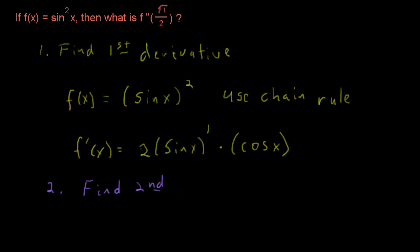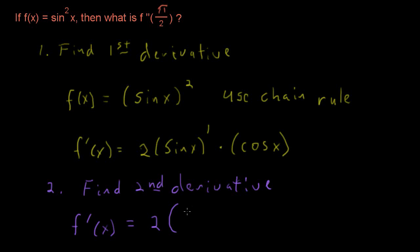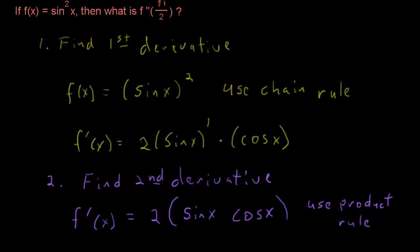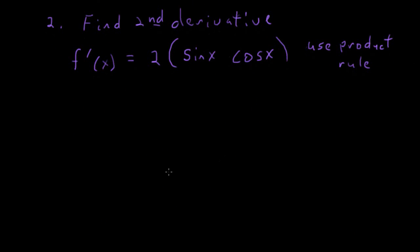Step 2 is to find the second derivative. Since we now have the first derivative, we take the derivative of that. Let's rewrite the first derivative and accentuate that sine x times cosine x is a product. This brings to mind that we'll need to use the product rule.